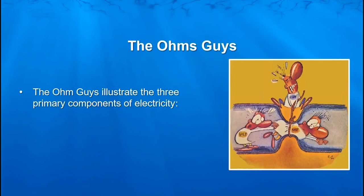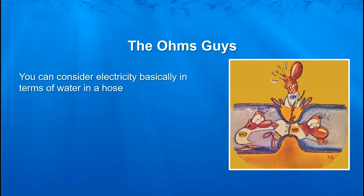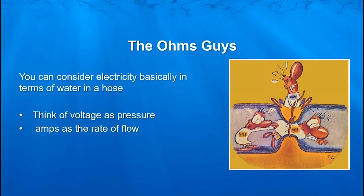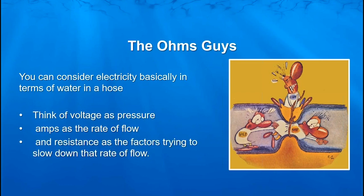We're going to start at the beginning with our fairly famous ABYC depiction of the ohms guys. These guys represent the three primary components or principles of the electricity that we deal with. We have volts, we have ohms, and we have amps. You can consider electricity in a very basic way in terms of water in a hose. The voltage is the pressure, sometimes referred to as the potential. The amps you can think of as the rate of flow, and the resistance is the factors that are trying to slow down that rate of flow — and the resistance is our ohm specification.